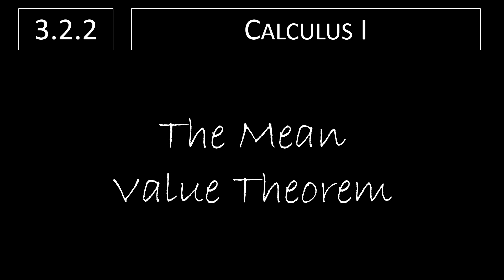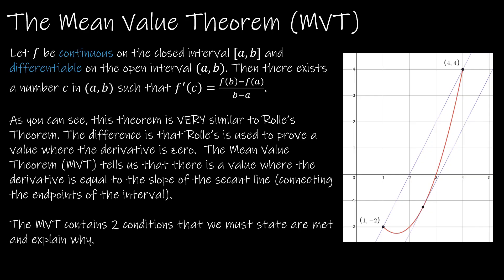We're now going to learn about the Mean Value Theorem, which is very similar to Rolle's Theorem. Rolle's Theorem said that if we have two y-values that are equal, and the function is continuous and differentiable, that at some point between those two x-values, at least one time, we're going to have a horizontal tangent line.